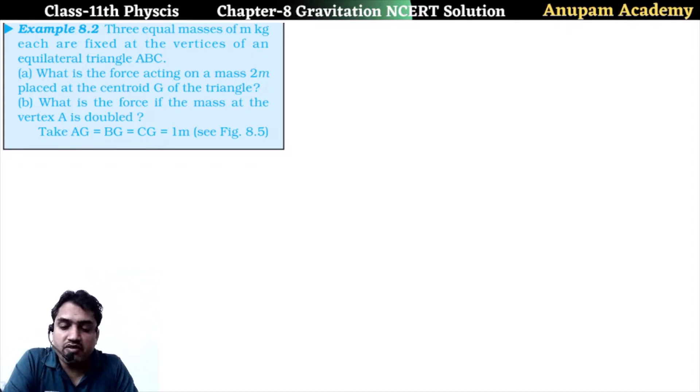So my dear students, now we are having second question, example number 8.2. The next topic is Newton's law of gravitation, universal law of gravitation. We know very well this Newton's law of gravitation is the force between two bodies directly proportional to the product of mass and inversely proportional to the square of distance between them.